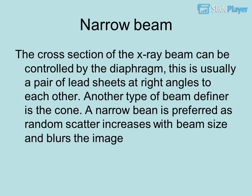Narrow beam: The cross section of the X-ray beam can be controlled by the diaphragm, which is usually a pair of lead sheets at right angles to each other. Another type of beam definer is the cone. A narrow beam is preferred as random scatter increases with beam size and blurs the image.